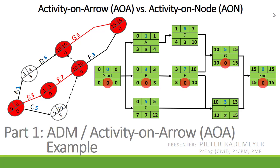This video is part 1 of a two-part series. I'll be doing an example using the activity on arrow method, also known as the arrow diagramming method. In part 2, which is a separate video, I'll be doing the same example using the activity on node method, also known as the precedence diagram method.